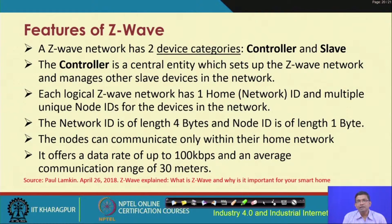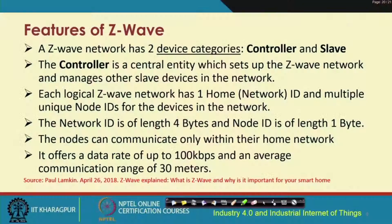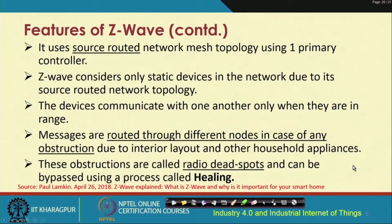The data rate offered is up to about 100 kbps over a range of 30 meters, which is good enough for many home automation and small industrial applications. This is why Z-Wave is a very popular, low-cost, and simpler technology compared to ZigBee, and it can be used to support different home and industrial automation applications.